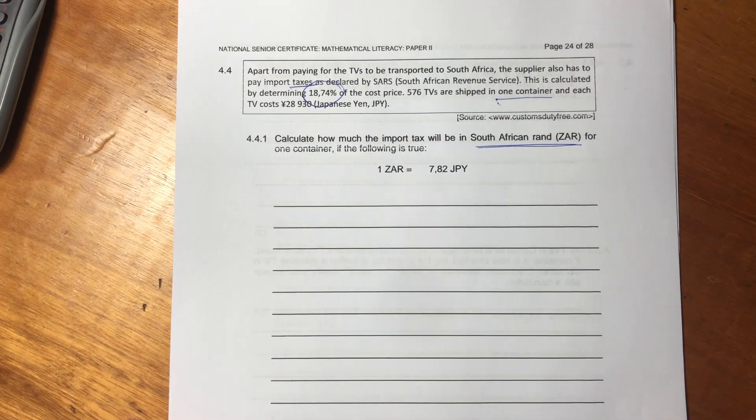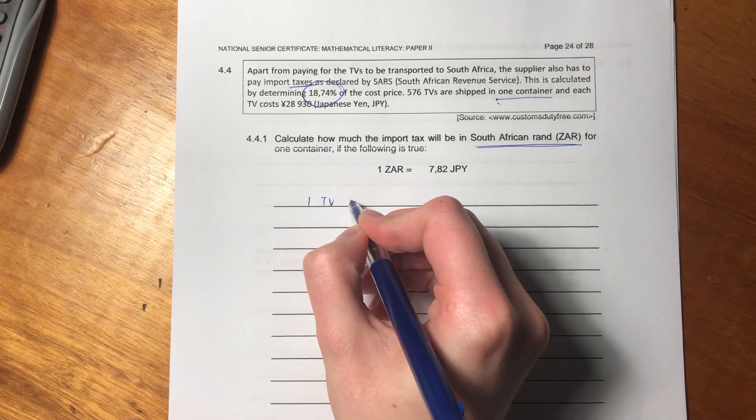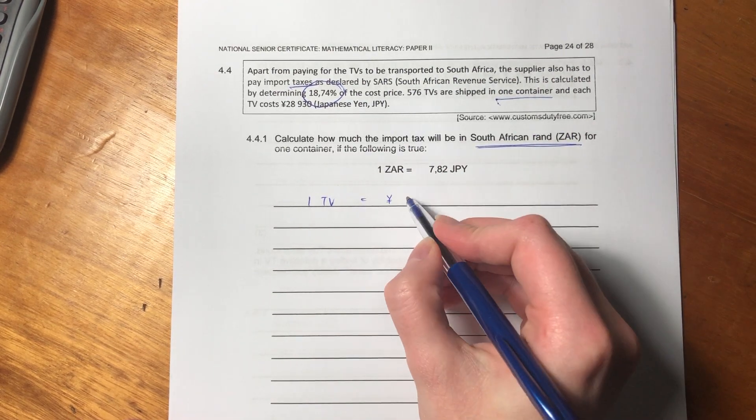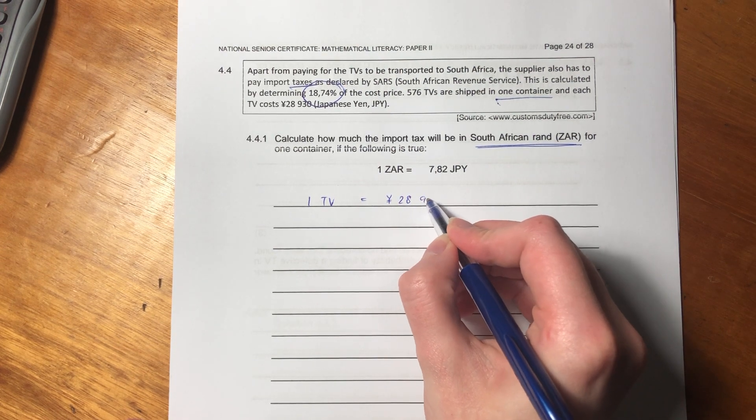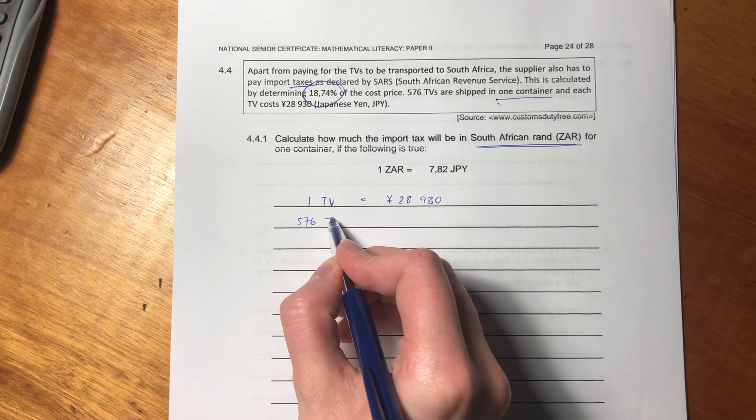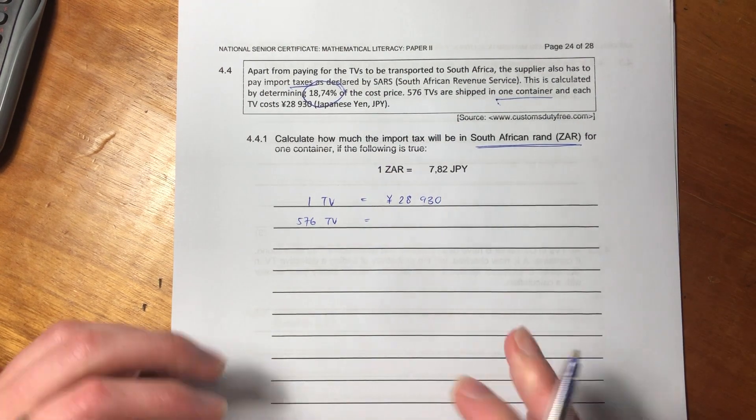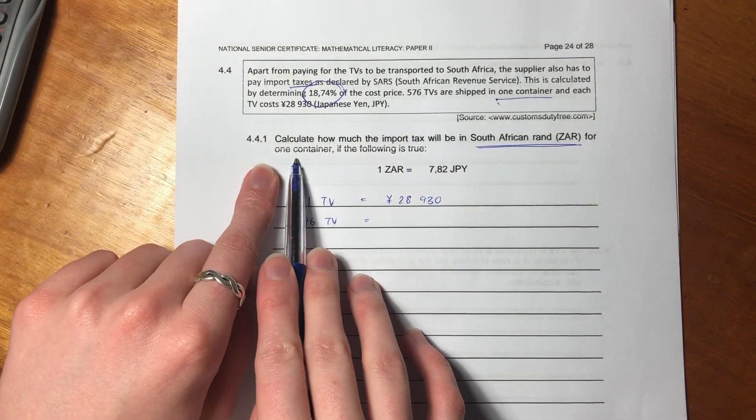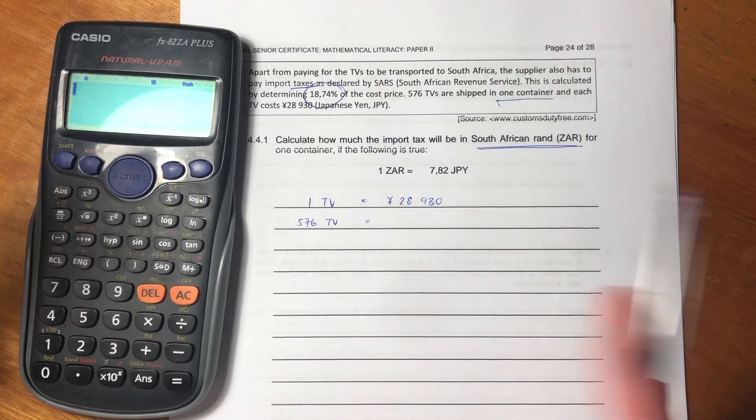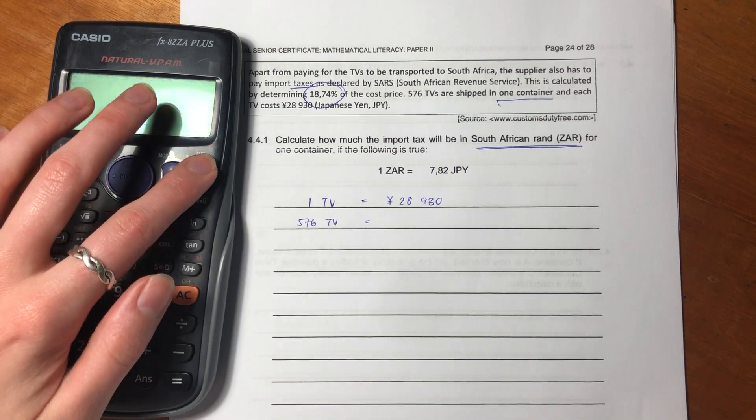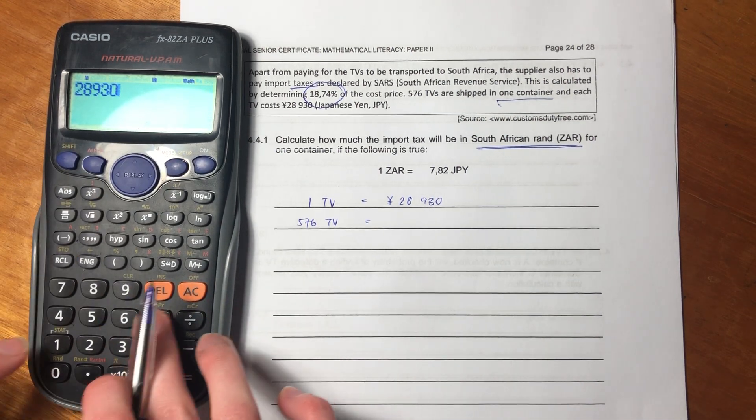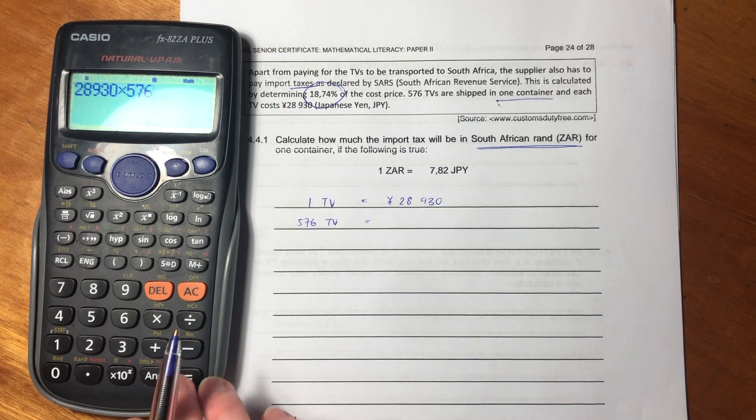So we know that one TV costs, let me see if I can do the yen sign, that's how much one TV costs. But now we have 576 TVs, right? Because we're doing it for a whole container. It's important to read the question, because some students would have forgotten that it wasn't just for one TV. So you say the amount times the number of TVs.